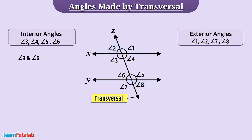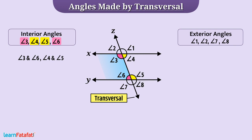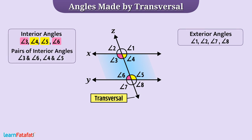Angle 3 and angle 6 are interior angles but are on the same side of the transversal. Similarly, angle 4 and angle 5 are also interior angles on the same side of the transversal. So, we say that these are a pair of interior angles on the same side of the transversal.